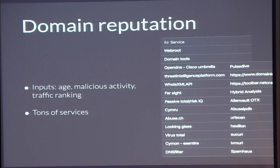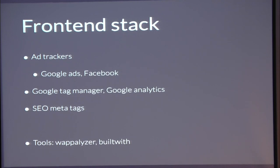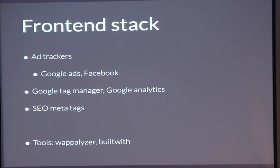Domain reputation: inputs include age, whether we've seen it conducting malicious activity or C2 traffic, and traffic rankings. There's no shortage of domain reputation services out there. Front-end stack analysis is also useful: is it running ad trackers, Google Ads, Google Tag Manager, Google Analytics, Marketo, Optimizely? Does it have SEO meta tags? What can we identify that is representative of a legitimate domain versus a phishing or attacker domain? These are all inputs into a reputation profile. Tools like Wappalyzer and BuiltWith are API-driven and can help with this.